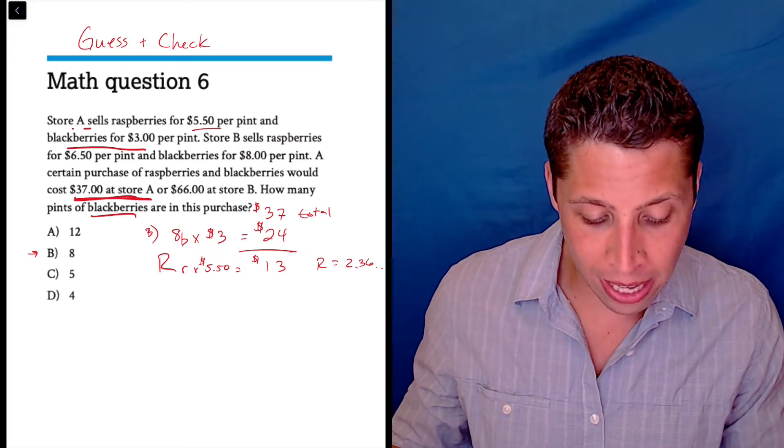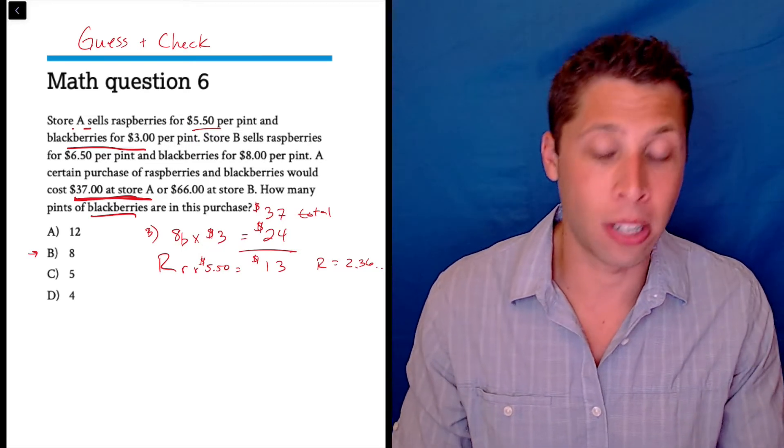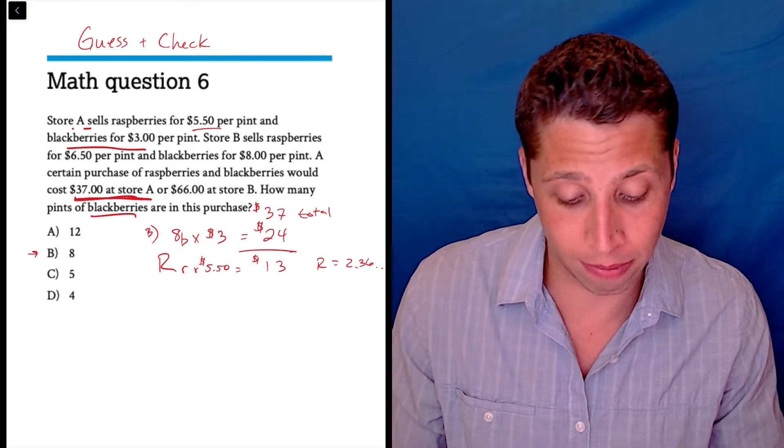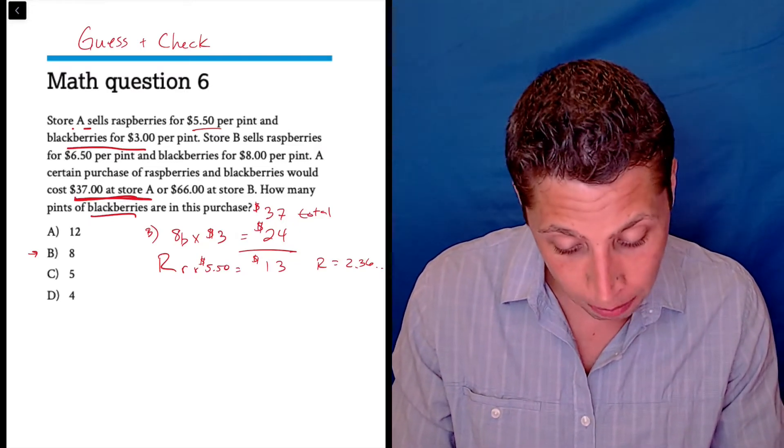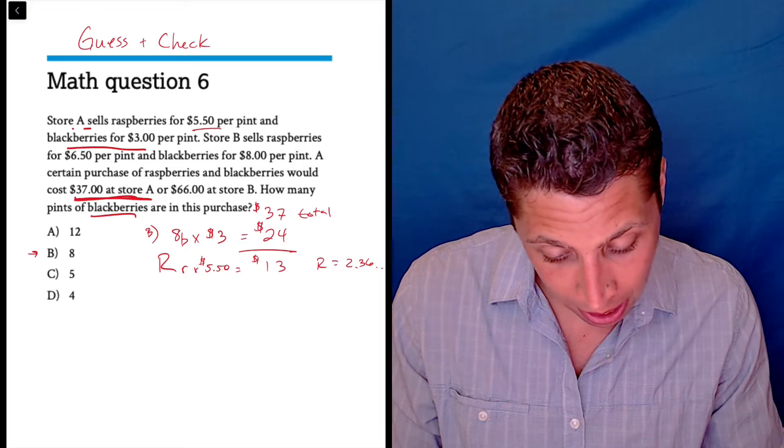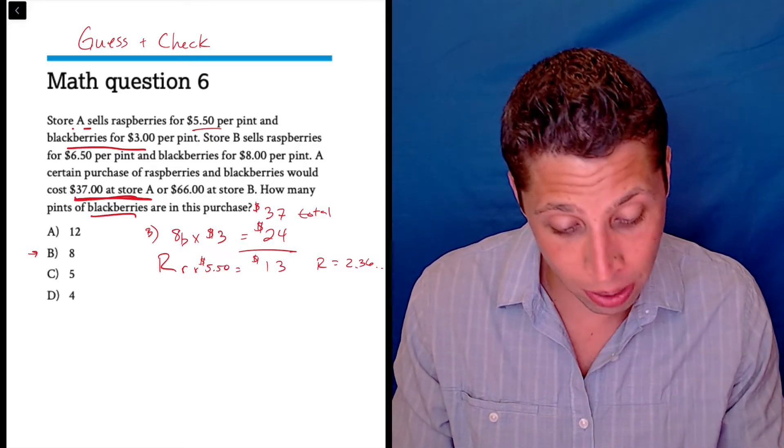Well, we can't have a decimal number of pints, okay? So that doesn't make any sense here. I mean, I guess they say that it can't. I guess it's possible. It doesn't say that it has to be a whole number of pints. But, yeah, it doesn't say. So let's see. We could, I guess, try it out now with store B.